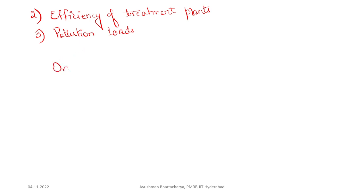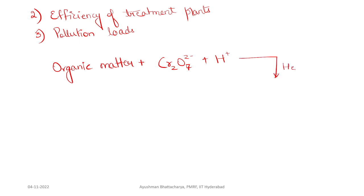In this test, the reaction happens like this. Organic matter reacts with K2Cr2O7, which is a strong oxidizing agent, in the presence of heat. It forms CO2 plus H2O and Cr³⁺. So basically, the oxidation of organic matter converts the dichromate to trivalent chromium.